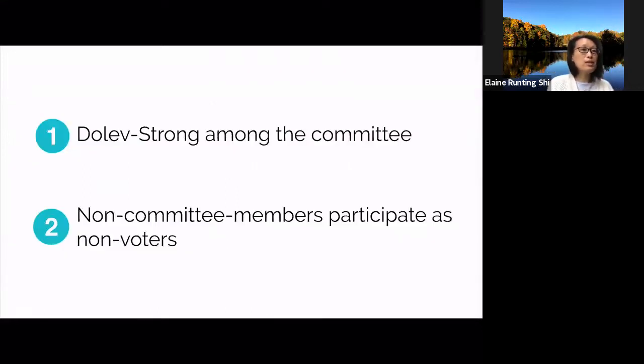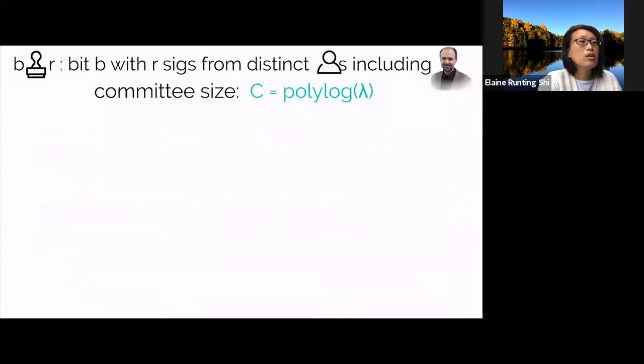For the time being, let's assume that the corruption is static and we can randomly elect the committee with the hash function after the adversary decides to corrupt. To understand our idea, I will first explain the classical Dolev-Strong protocol and how to leverage Dolev-Strong to allow the committee to reach agreement. Then I will explain how to let non-committee members also participate in Dolev-Strong as non-voters. And this will let the non-committee members reach the same decision as the committee members.